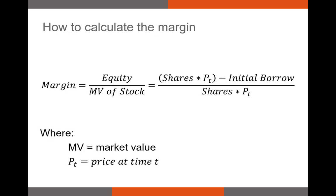This is the formula we use to calculate margin, and you can use it to solve practically any problem related to margin. Our margin is just the percentage of the market value of our portfolio represented by our own equity. To calculate that, we multiply all the shares of all the stocks in our portfolio by the price of each stock, subtract the amount we borrowed from our broker, and then divide by essentially the market value of our portfolio.